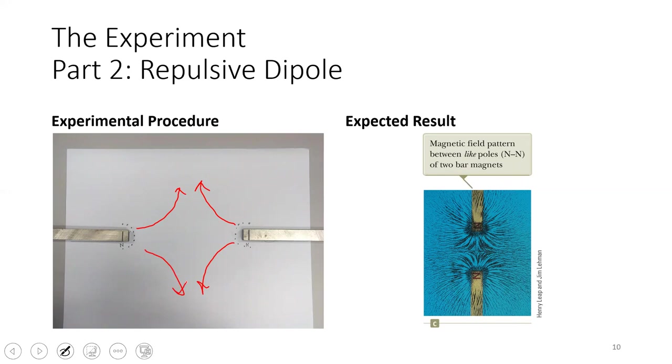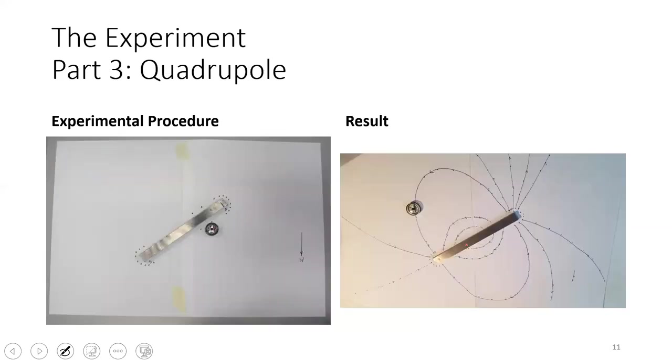You can see that with the iron filings in the image to the right-hand side of your screen, that these lines repel each other, because remember, magnetic field lines should not cross. Here in the center, you'll actually have a strange area with no magnetic field.